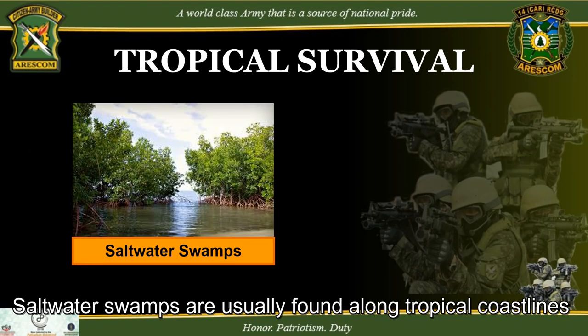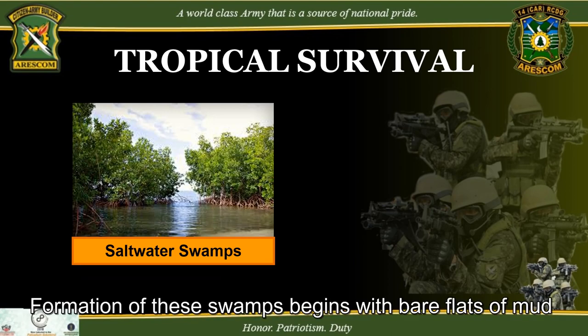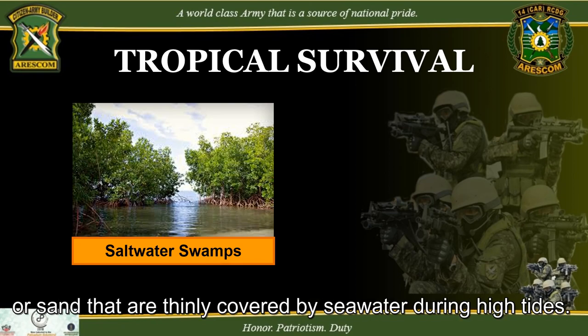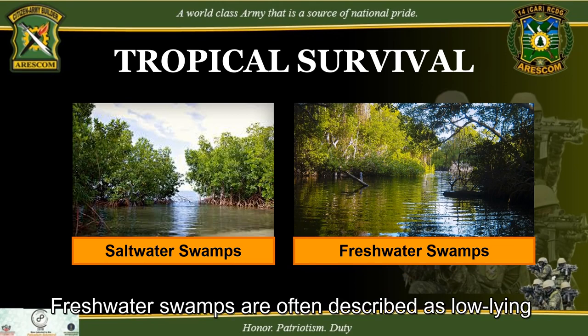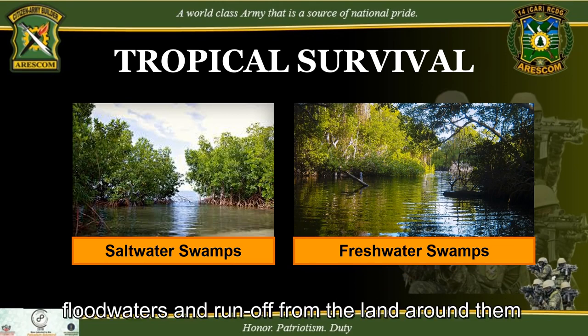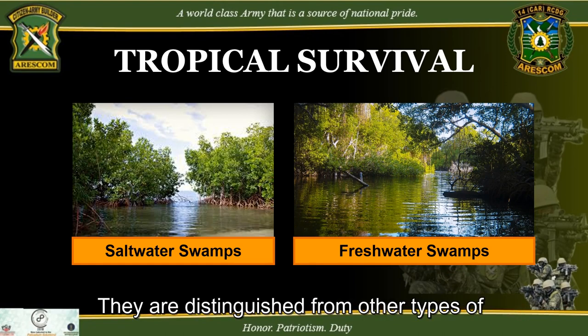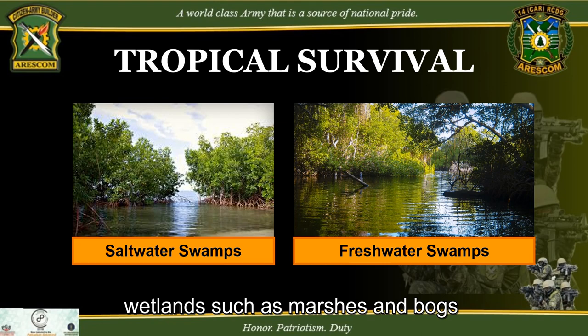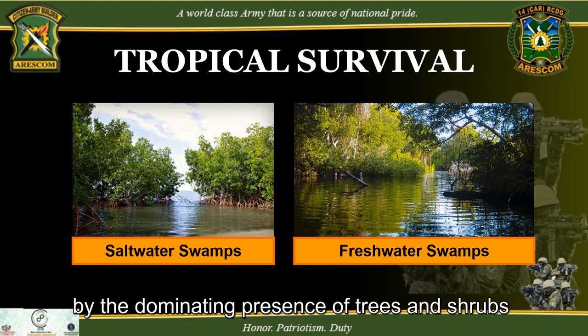Saltwater swamps are usually found along tropical coastlines. Formation begins with bare flats of mud or sand thinly covered by seawater during high tides. Freshwater swamps are low-lying forested regions that absorb floodwaters and runoff, distinguished from marshes and bogs by the dominating presence of trees and shrubs.